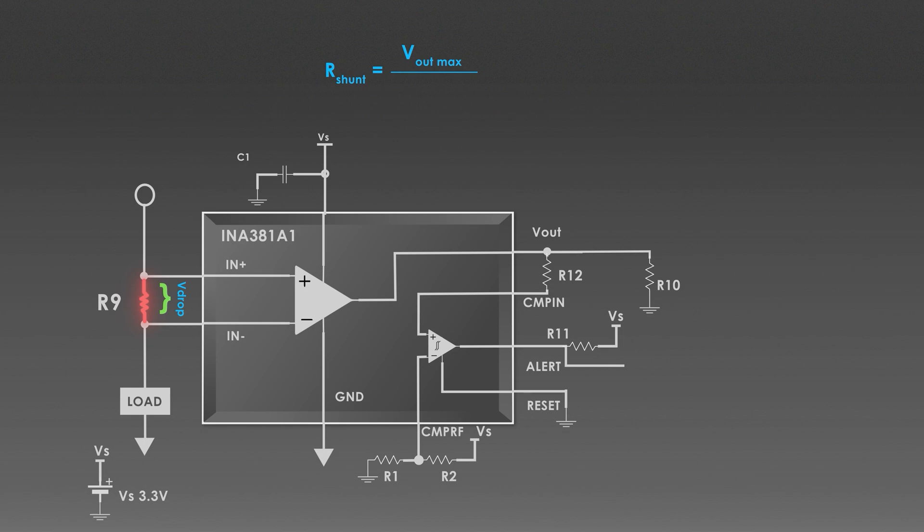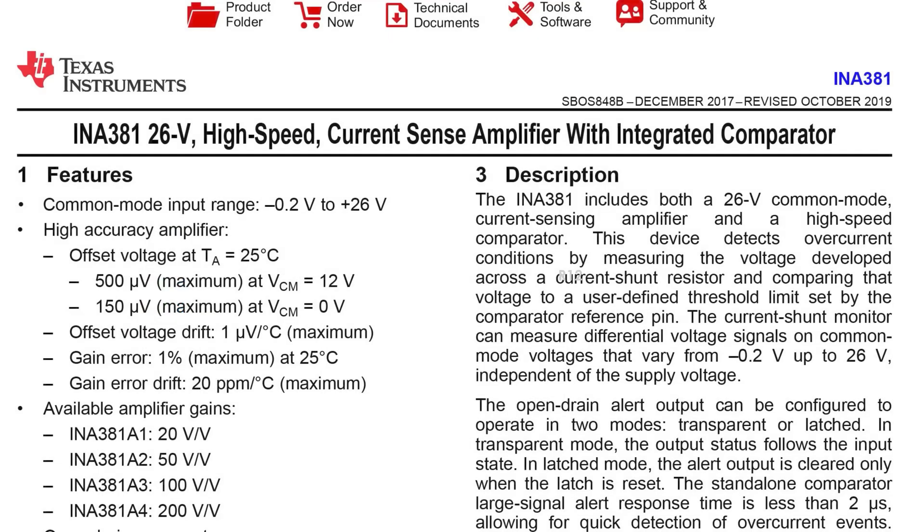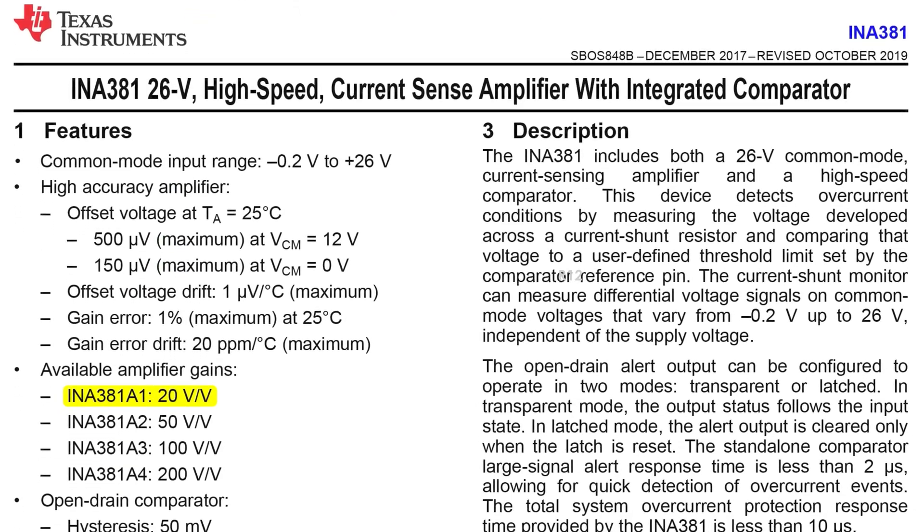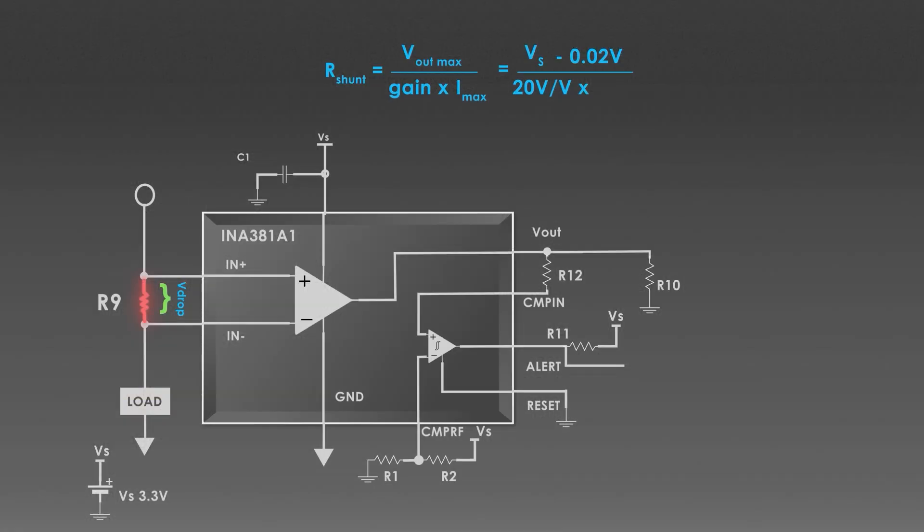Where Vout is maximum output voltage when the current reaches maximum value. That means supply voltage minus 20 mV of margin. The gain is fixed by the amplifier, which is 20 volts per volt. We can get this value from IC's datasheet. You can also use a different gain amplifier as well. And the maximum sense current value is 40 Amperes.